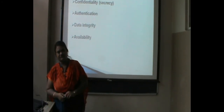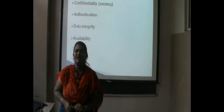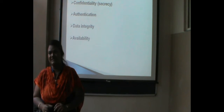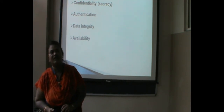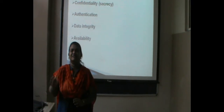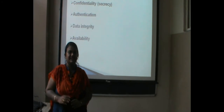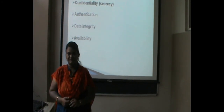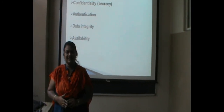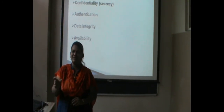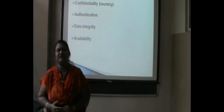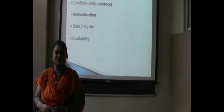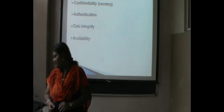The second objective is authentication. Authentication means that whenever any message, email, or private information is sent, you have to check whether that particular data is going to the correct person. Authentication techniques are used for this — like biometric systems and passwords. For example, in our college, only the particular authenticated person can use the Wi-Fi system. That is authentication.